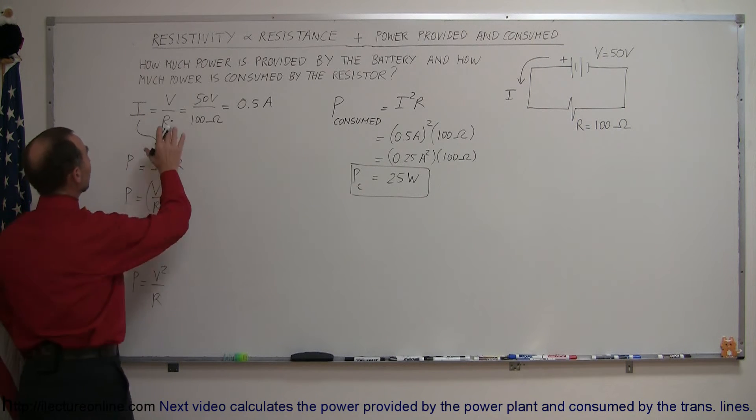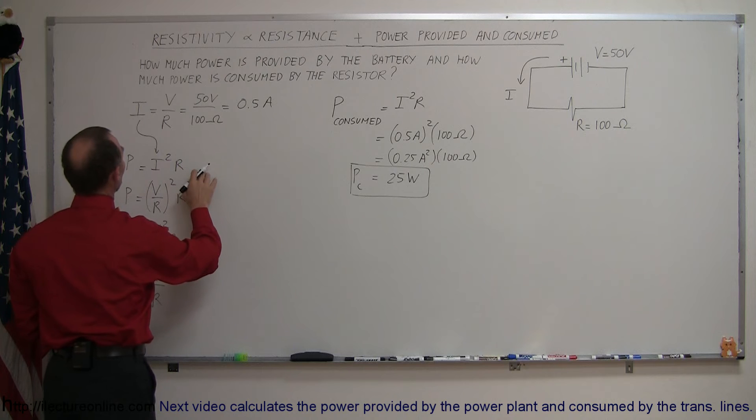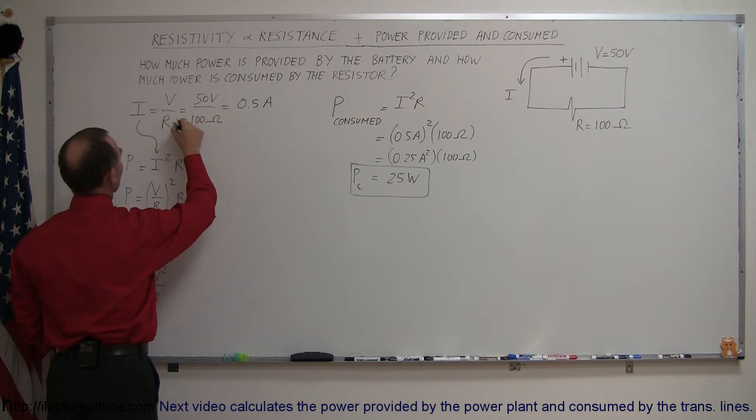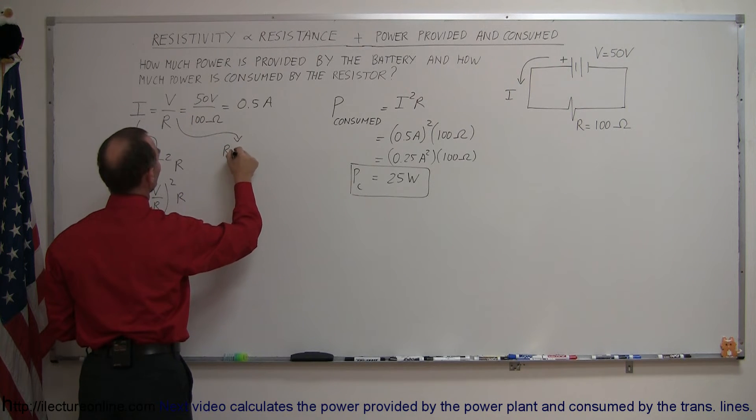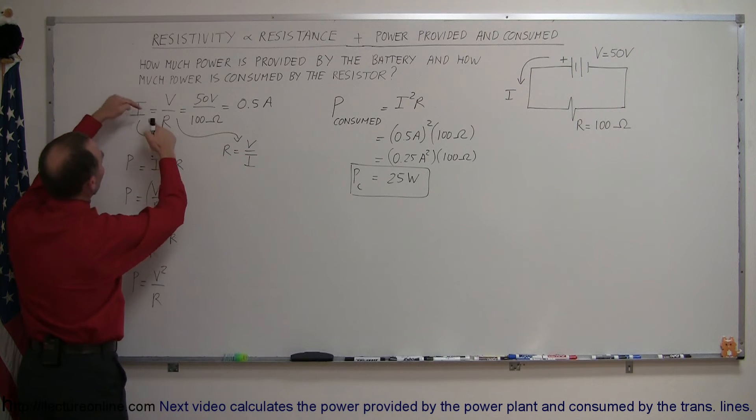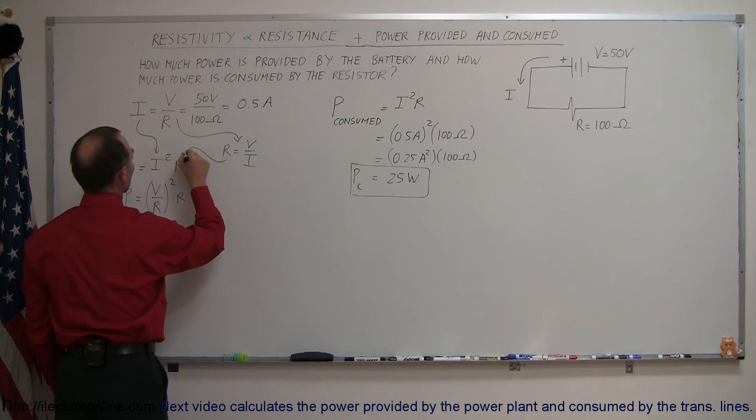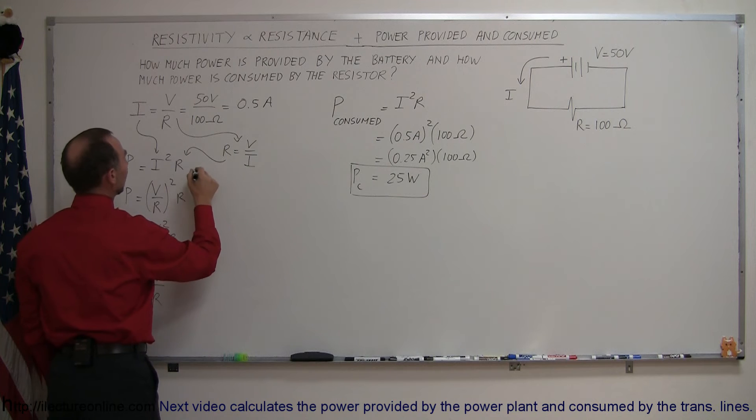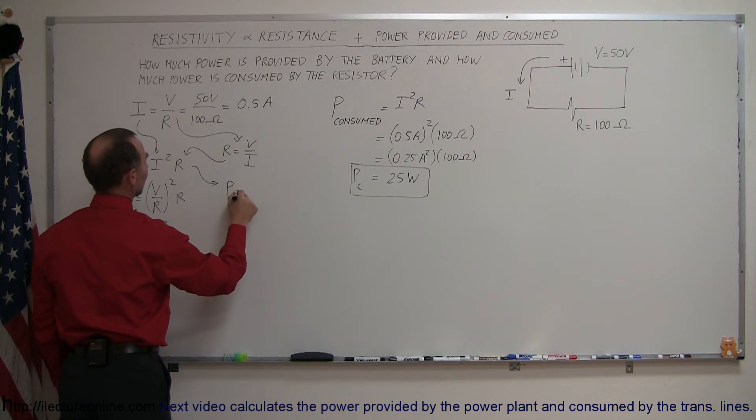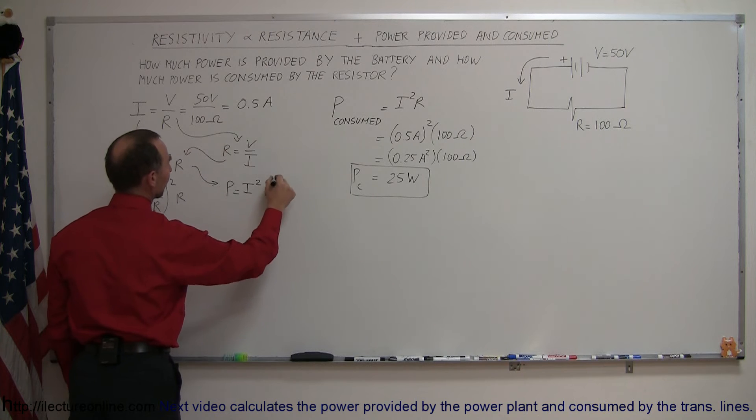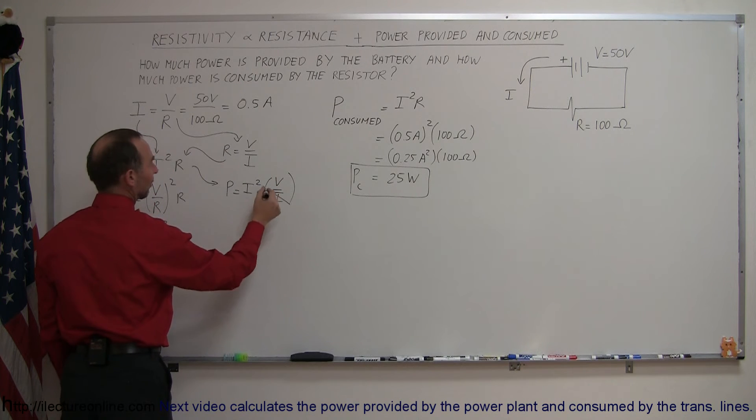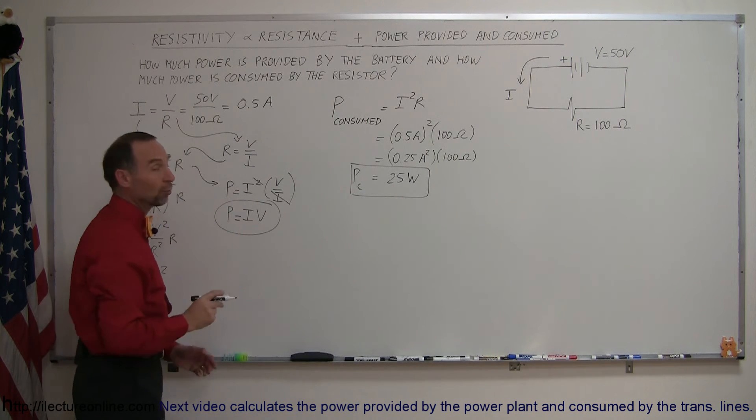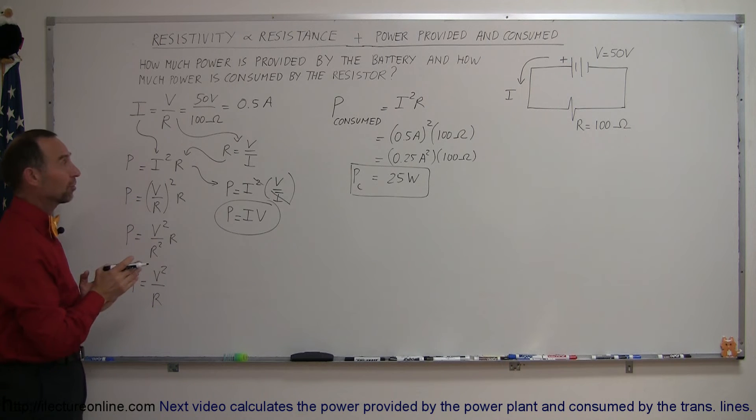What we can also do is rearrange Ohm's law. Instead of writing R, we can write V over I. So if I take Ohm's equation and I write this as R is equal to V over I, simply by replacing I and R, and then I replace this into the equation, instead of replacing V over R for I, I replace V over I for R, we get a third form of the equation. We get power is equal to I squared times V over I. And then this I cancels out one of those I's, and we get power is equal to the current times the voltage. And this form of the equation is what we typically use to express the power provided.